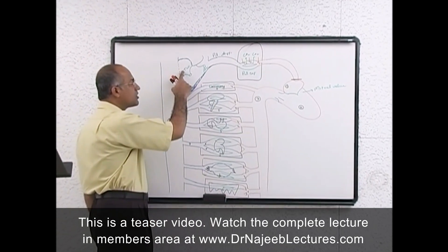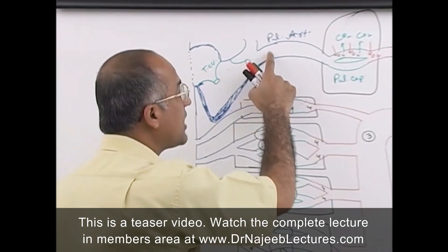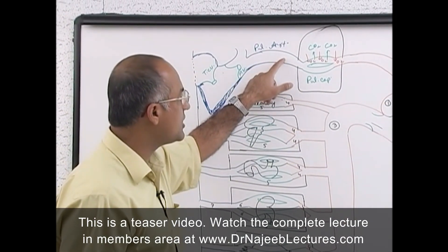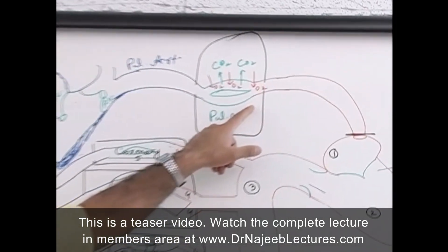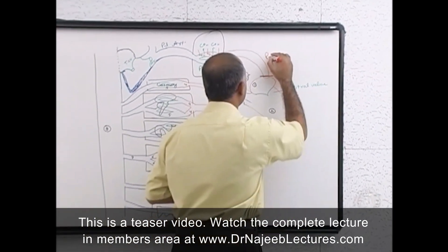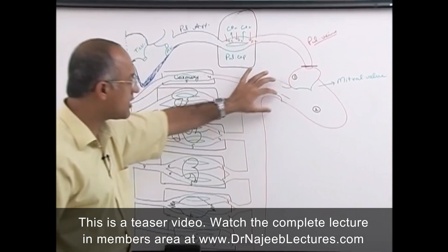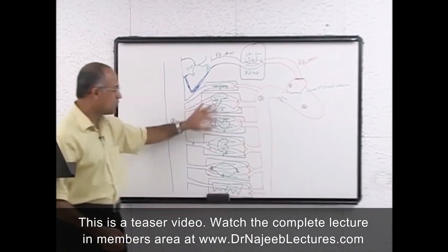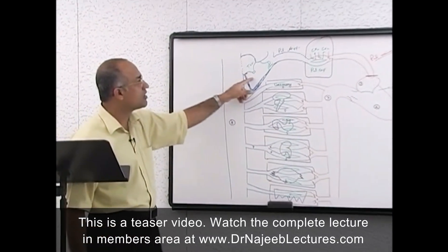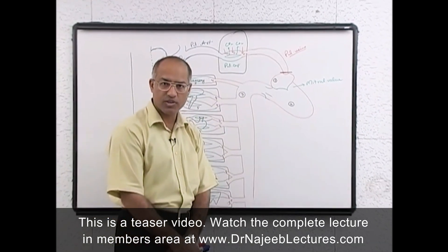From the right heart, pulmonary circulation begins. The right atrium and right ventricle act as the pump of pulmonary circulation. Pulmonary circulation includes the pulmonary artery carrying venous blood rich in carbon dioxide, pulmonary capillaries for gas exchange, and pulmonary veins carrying oxygenated blood back to the left atrium.